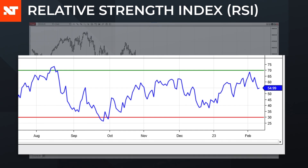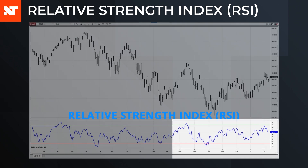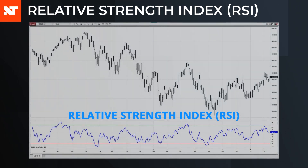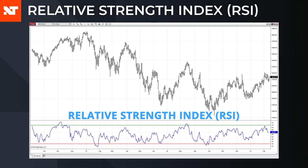Note that a market can remain overbought or oversold for an extended period. When price moves below 70 or above 30, the trend could be changing and can be interpreted as a signal to buy or sell. Because RSI has the same scale regardless of the traded instrument's price, you can compare RSI values across multiple markets to get a sense of which markets are overbought, oversold, or neither — possibly consolidating.